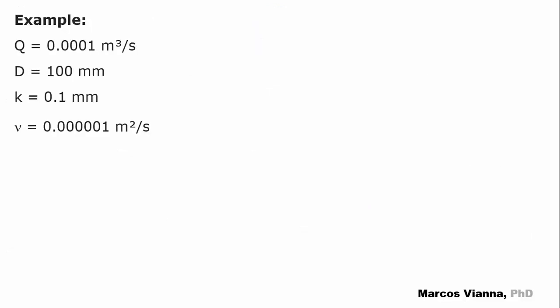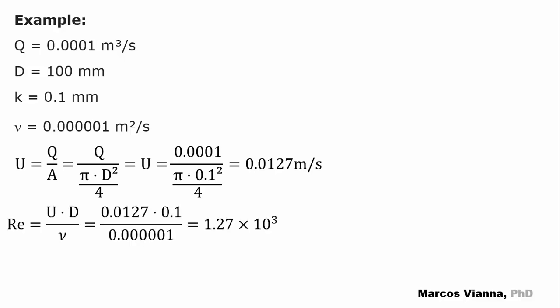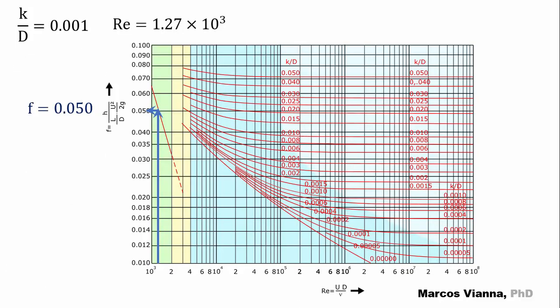Let's solve another example. These data are not typical of water supply systems. The flow is too small. That's because we want to force a laminar flow condition. We calculate the average velocity of the water, the Reynolds number, and the K over D relationship. This is what happens on the Moody diagram.